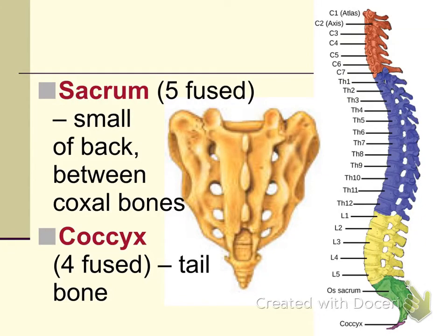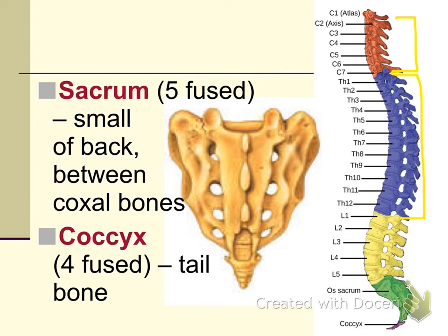Just inferior to the lumbar vertebrae is the sacrum, which is a fusion of five bones from childhood. It is called the small of the back and forms part of the pelvic girdle. Just below the sacrum is the coccyx bone, which is a fusion of four bones and is the tailbone. Looking at the entire vertebral column: C1–C7 is the cervical region, T1–T12 is the thoracic region with rib attachments, L1–L5 is the lumbar region, followed by the sacrum and coccyx.